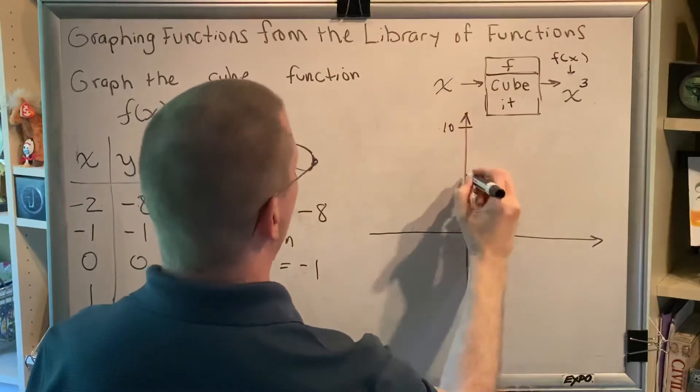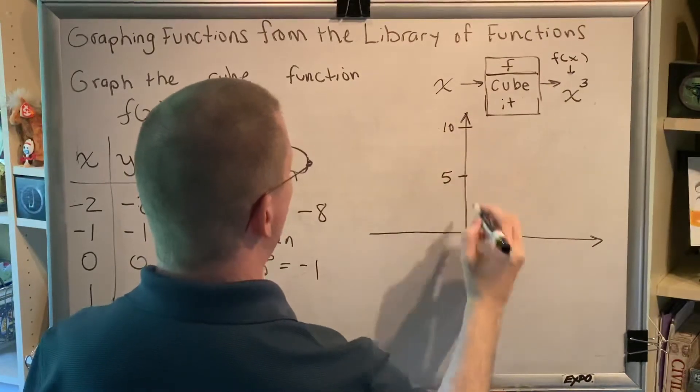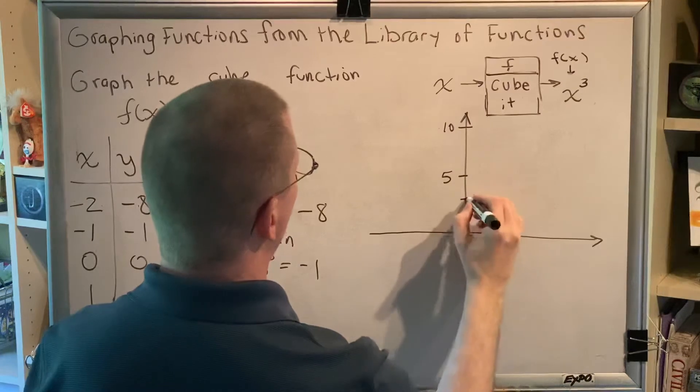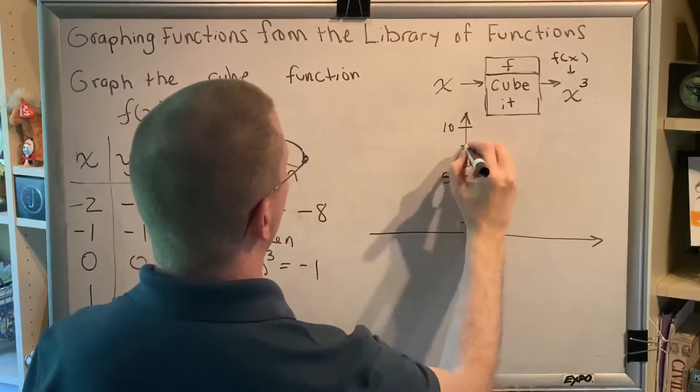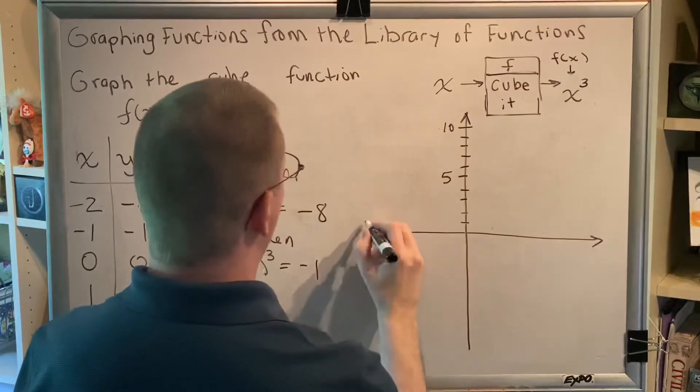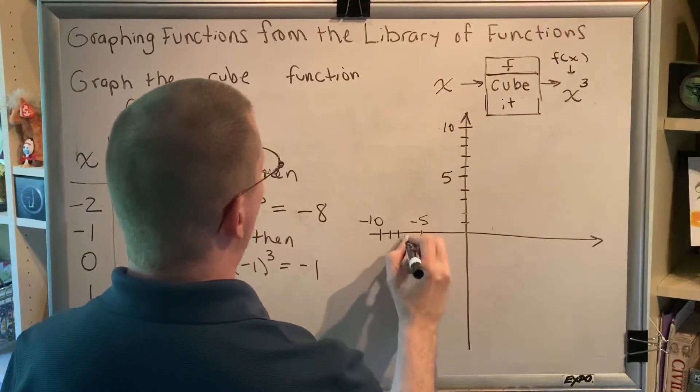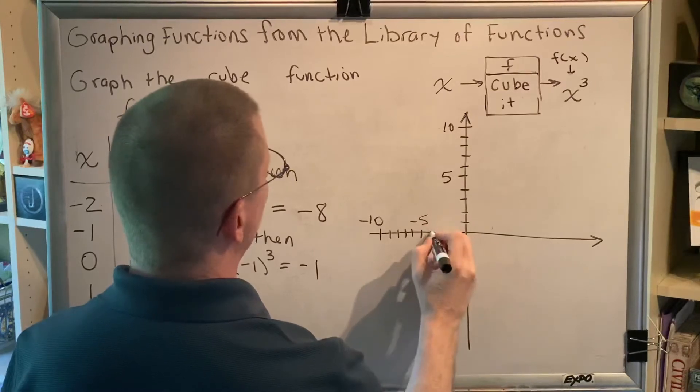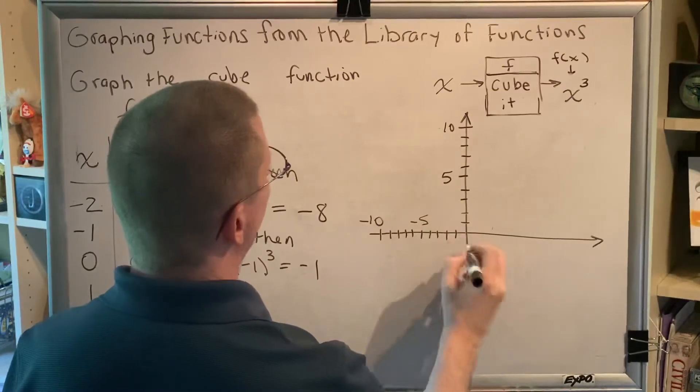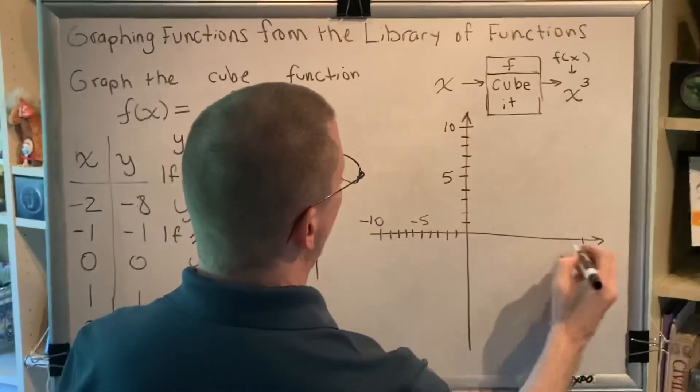We're going to say that this is 10 up here, which means this is 5, so that would be 1, 2, 3, and 4, 6, 7, 8, and 9. This is negative 10 over here, so this is negative 5, negative 9, negative 8, negative 7, negative 6, negative 4, negative 3, negative 2, negative 1.